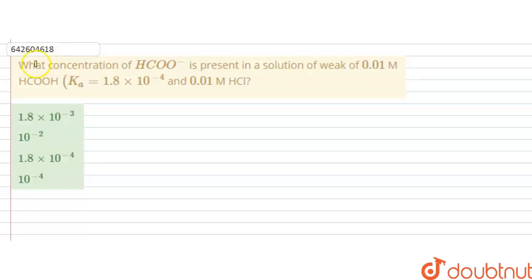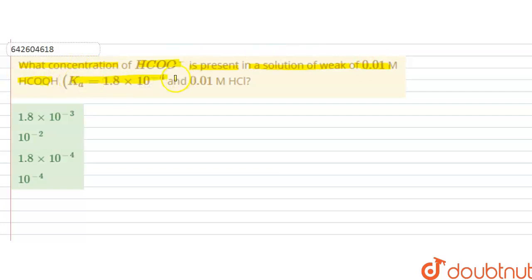Hello students. The question is: what concentration of HCOO⁻ is present in a solution of weak acid — that is 0.01 molar HCOOH whose Ka is given as 1.82×10⁻⁴ — and 0.01 molar HCl? So in this question we have to calculate the concentration of the HCOO⁻ ion present in a solution of weak acid 0.01 molar HCOOH and 0.01 molar HCl.